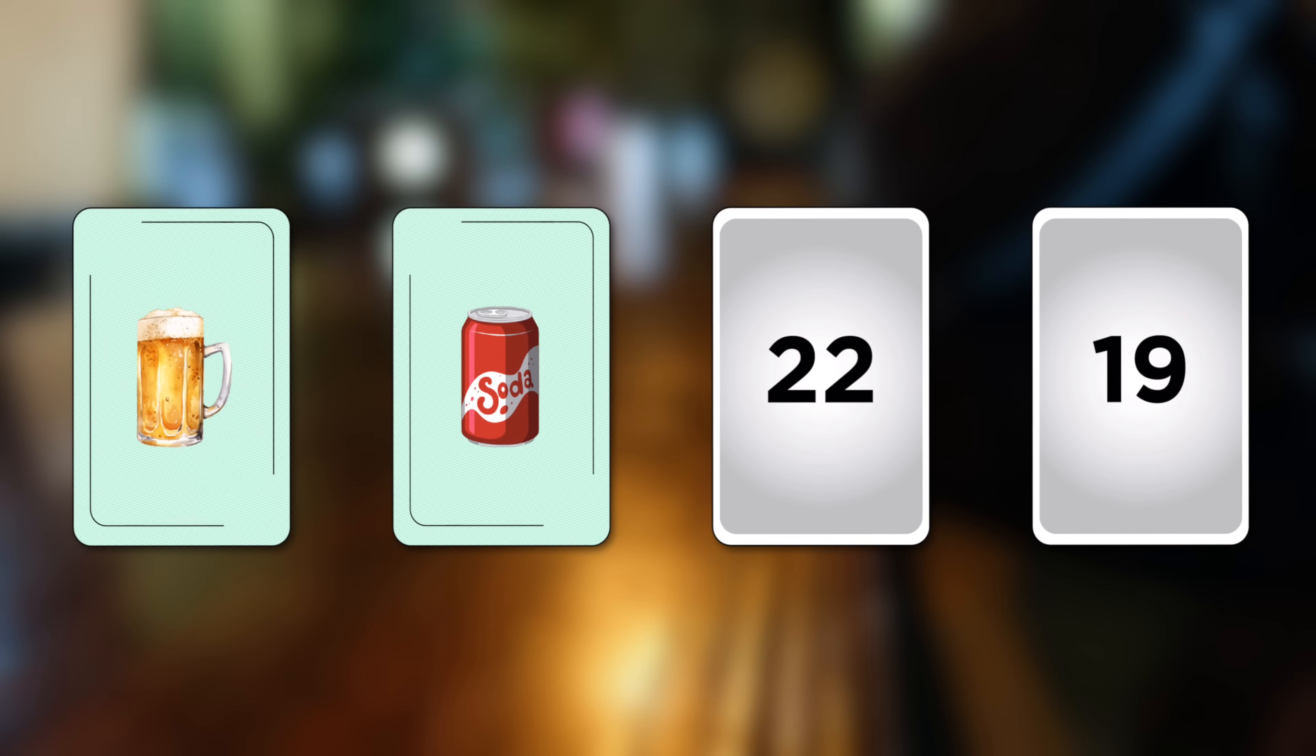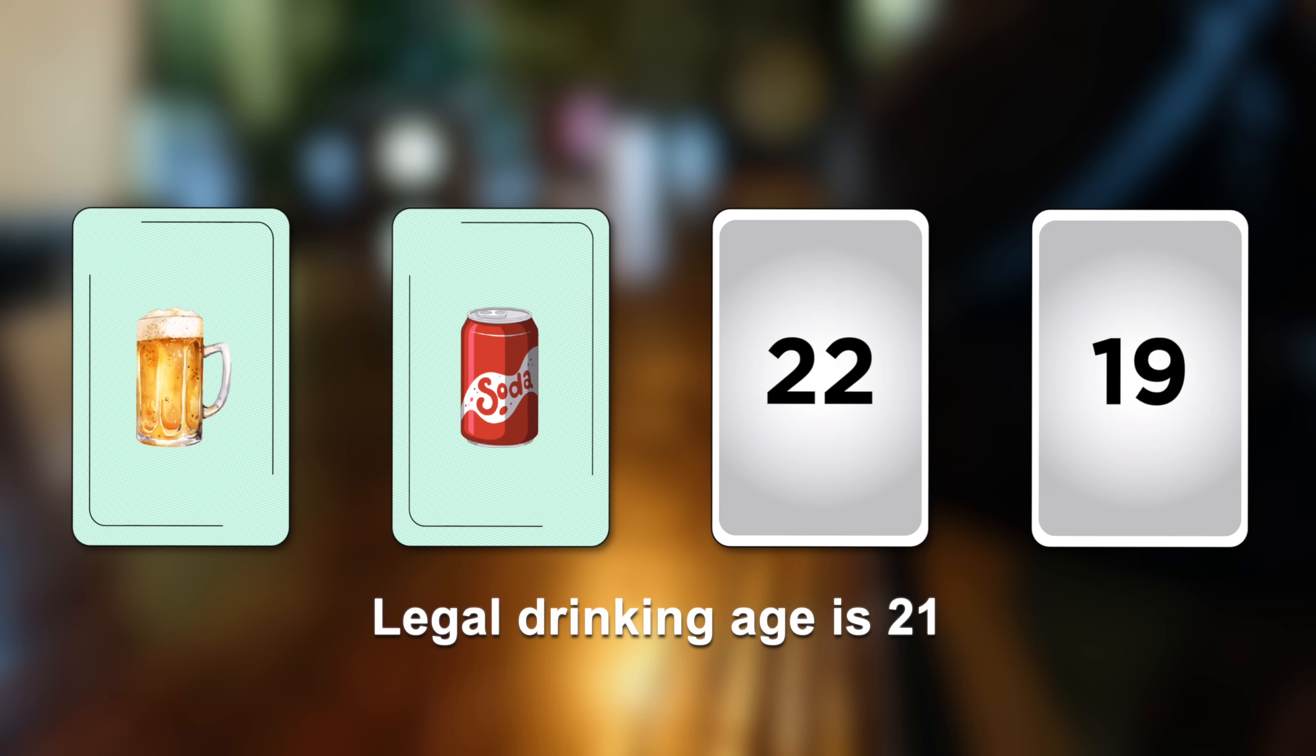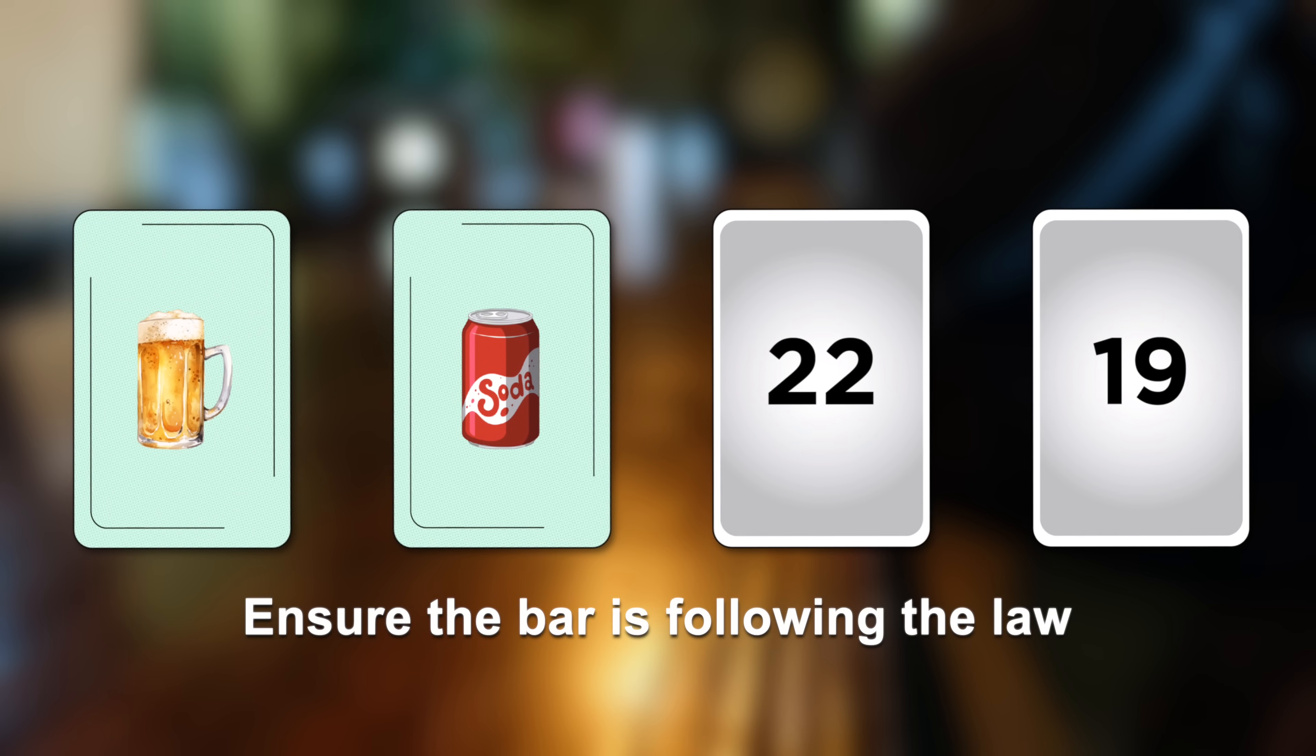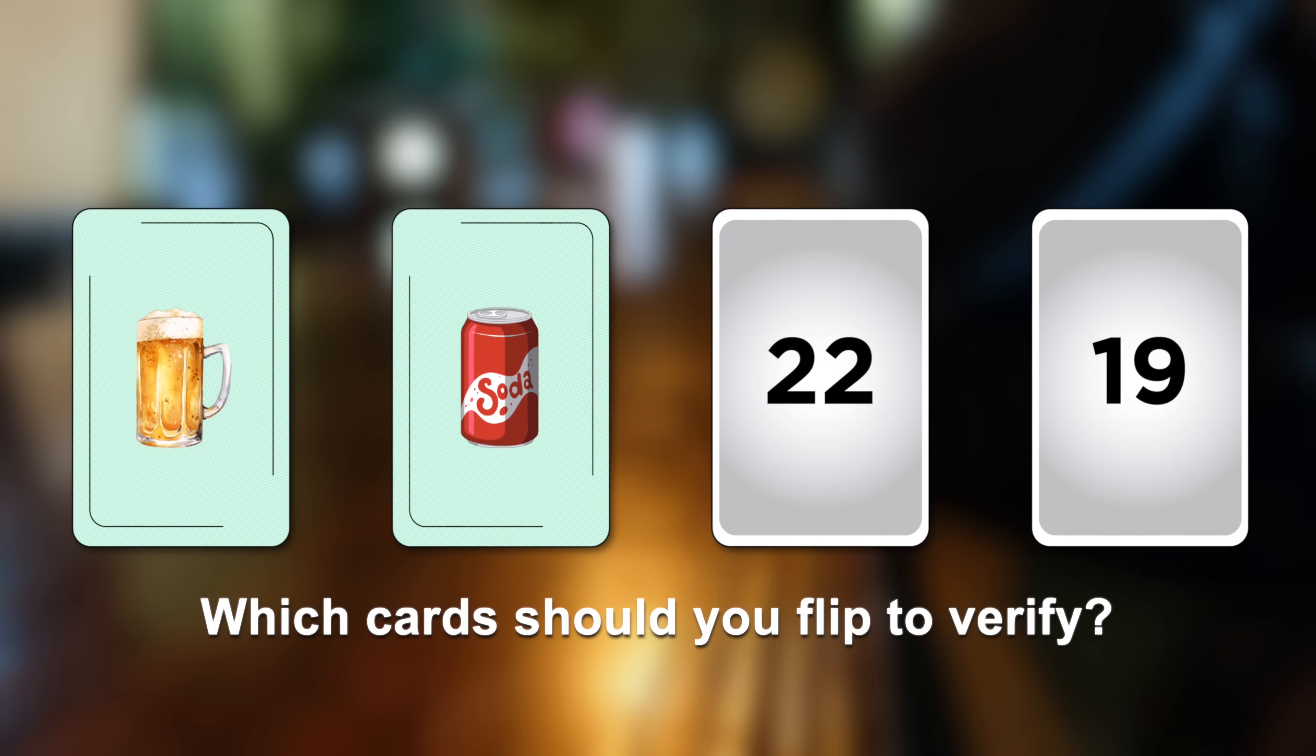a person who is 22 years old, a person who is 19 years old. Let's say the legal drinking age is 21. Your task is to ensure the bar is serving drinks in accordance with the law. Which cards should you flip over to verify this?